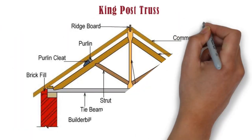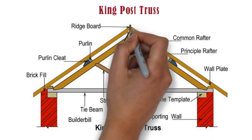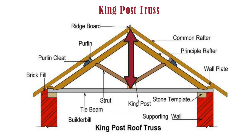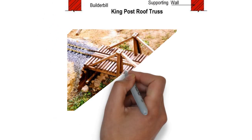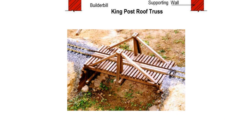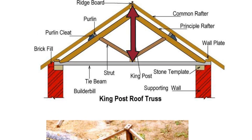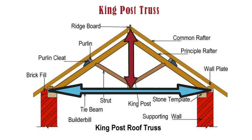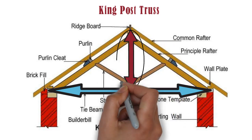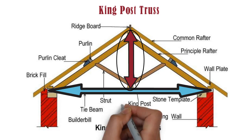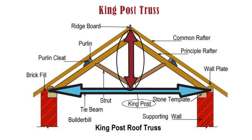A king post truss contains a central vertical post that is utilized in architectural or bridge designs dealing with tension to support a beam underneath from a truss apex above. In case of king post truss, a single vertical post extends from top to bottom, which is called as king post.